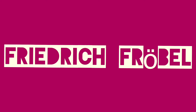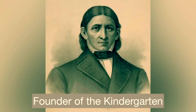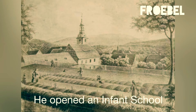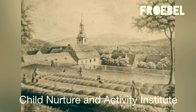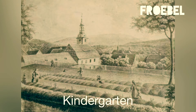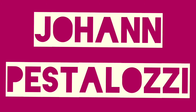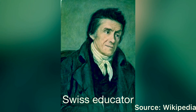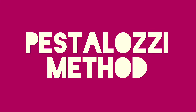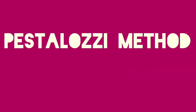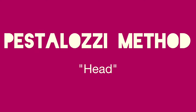Friedrich Froebel. He's a German educator who was the founder of the kindergarten. He opened an infant school in 1837, which he originally called the Child Nurture and Activity Institute and later renamed it to the kindergarten, or garden of children. Johan Pestalozzi. He's a Swiss educator known as the father of modern education. The Pestalozzi method is a whole-child approach that emphasizes the development of all aspects of a person, including the head, heart, and hands.